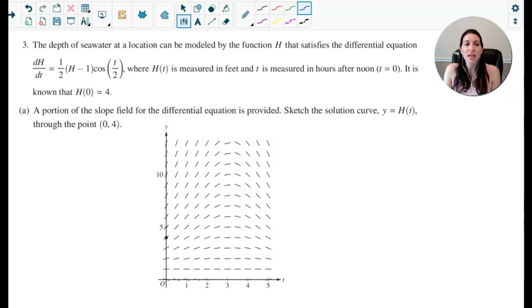For part a you are given a slope field for the differential equation and you are asked to sketch a solution curve for h(t) and you need to make sure it goes through the point (0, 4). Now what's nice is they have already labeled the point (0, 4) so we can't make that mistake, and as best I can I'm going to follow the little tiny slope fields or little tiny tangent lines that are drawn in and go to the far left and right ends of the graph. So that's my best solution curve making sure to follow those little tiny tangent lines.